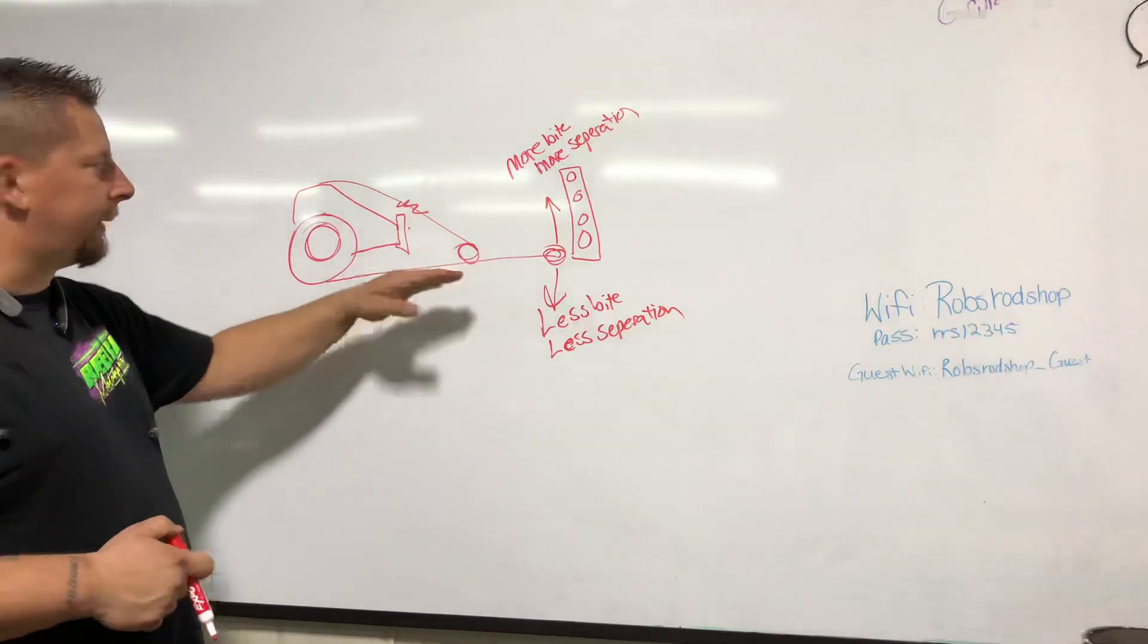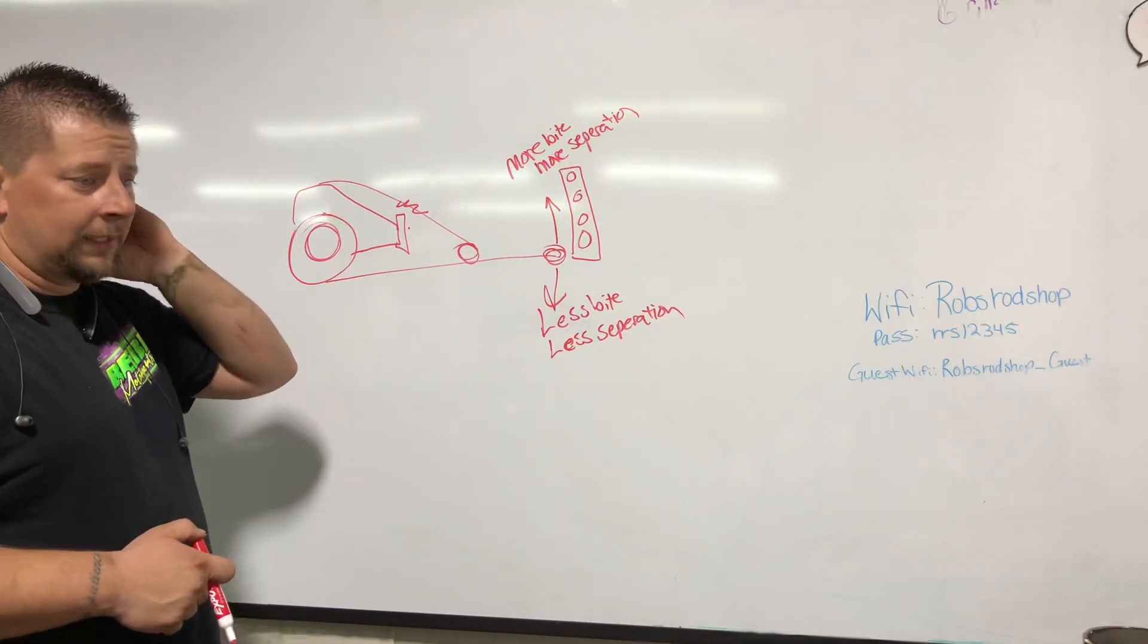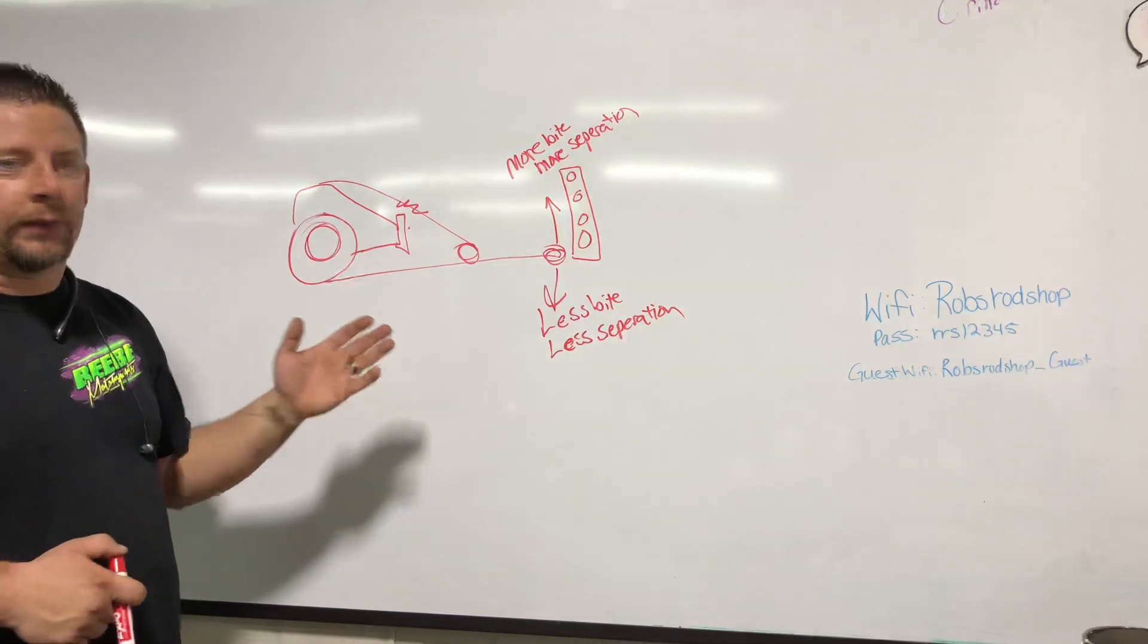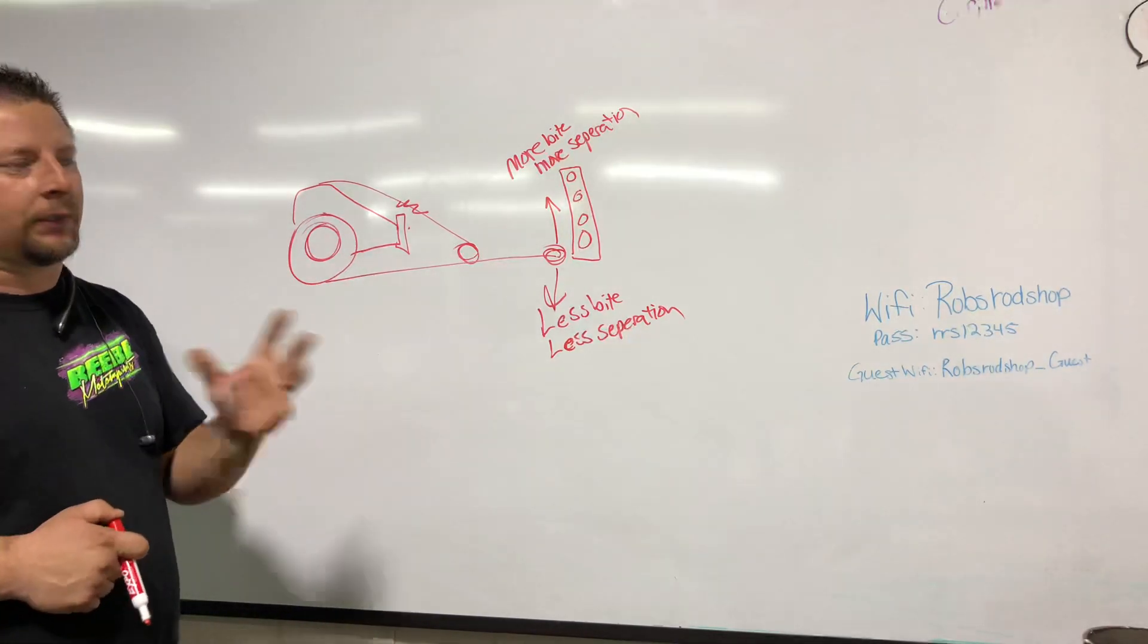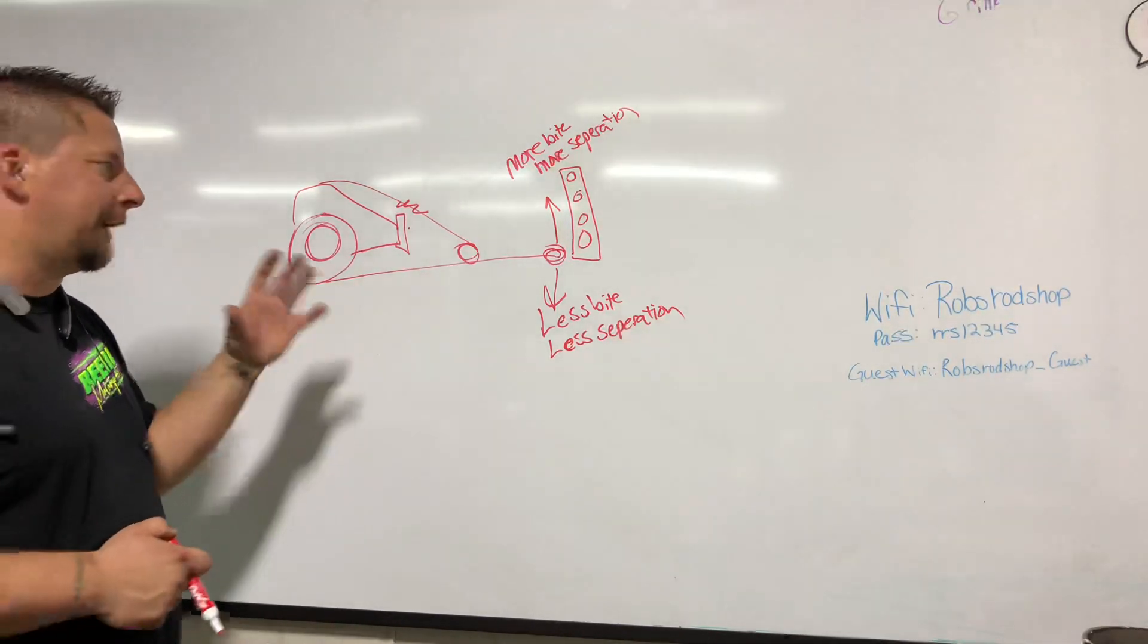But this is basically a ladder bar setup. They're very simple, very easy to use. You're just at the mercy of whoever put it together. If they built it around the slick, it may be hard to get to work with a radial tire. If they built it around a radial tire, it may be a little too harsh on slick, but easy either way.